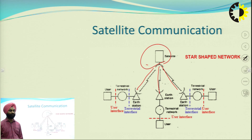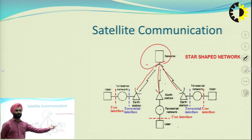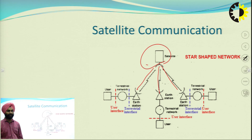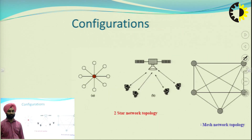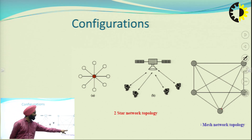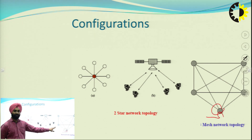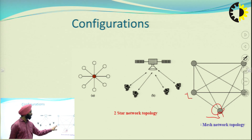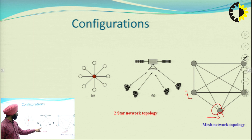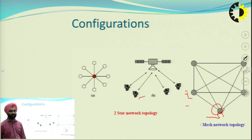In the star network, a satellite receives a signal from one user and distributes it to other users. The other network type is mesh, where a satellite is communicating with other stations and those stations are also communicating with all other stations. This illustrates star topology versus mesh network topology in satellite communication.